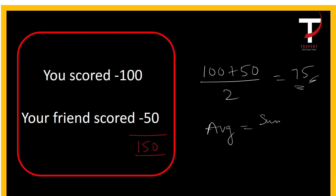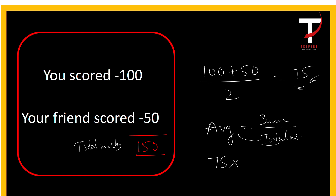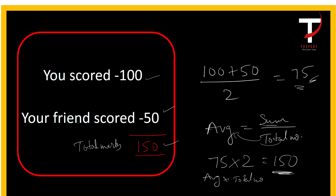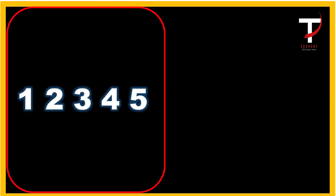We can also calculate the total marks using this average. Since average equals the sum of numbers divided by the total count, we can rearrange: sum equals average multiplied by total number. So instead of calculating 100 plus 50 to get 150, we can calculate the total sum as average into total number, which gives 75 into 2 equals 150.